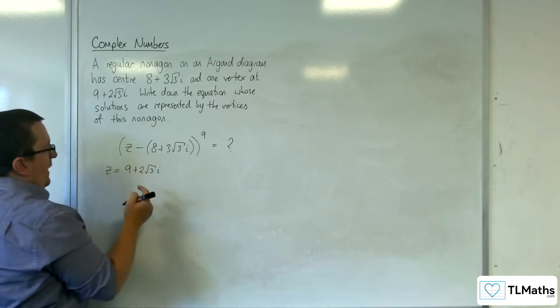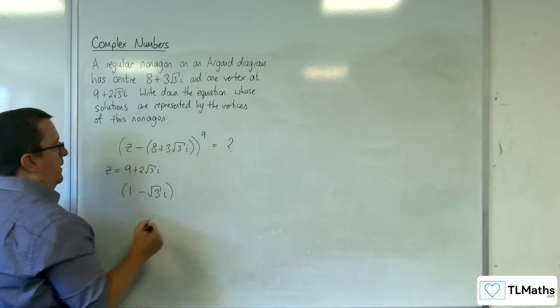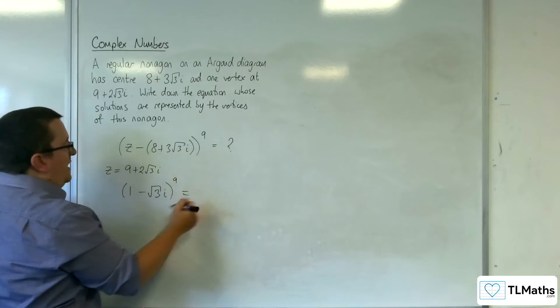So we're going to have 9 - 8, so 1, 2√3 - 3√3 is -√3 and that's i and that's to the power of 9. So I need to work out what this is.